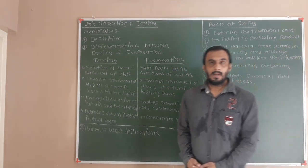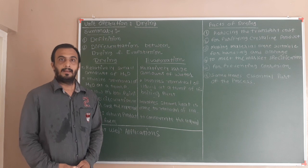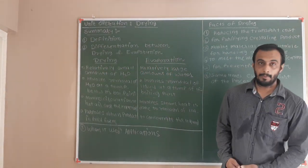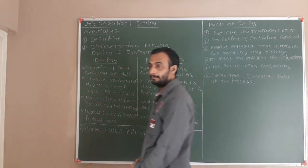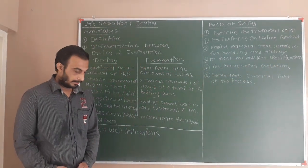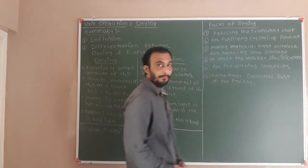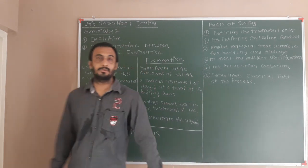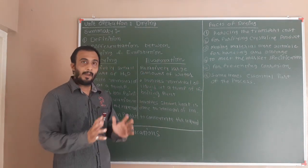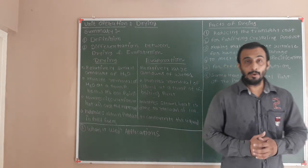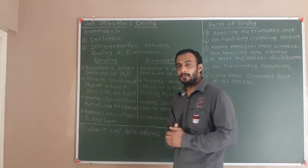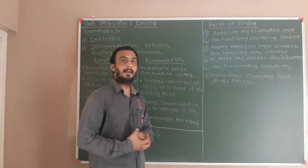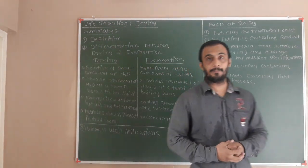I am Ravish Chani and from today we will start your paper of Industrial Chemistry IC 11, and the name of the paper is Unit Operations and Unit Processes 2. We have completed in your first semester paper IC 1, Unit Operations and Unit Processes 1.